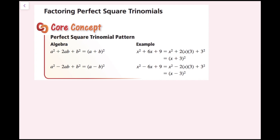One thing to note: to recognize this pattern quickly, it's helpful to look at the first term and the last term. If they are both perfect squares, then it's easier to tell whether the middle term works for this pattern. Check the first term, check the last term — if they're both perfect squares, then see if the middle term equals 2 times the square root of the first term times the square root of the second term.